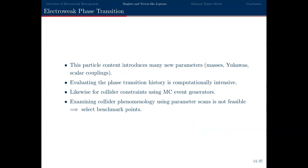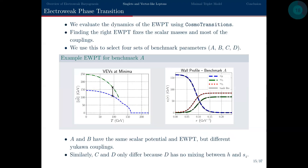This particle content introduces a lot of new parameters — masses, new Yukawa couplings, and scalar couplings. Evaluating the phase transition history and collider phenomenology is computationally intensive, so we proceed by taking benchmark points rather than doing a complete parameter scan. We first scan over the scalar potential parameter space to look for sets of parameters giving the right kind of phase transition, using the package CosmoTransitions to evaluate the phase transition history.